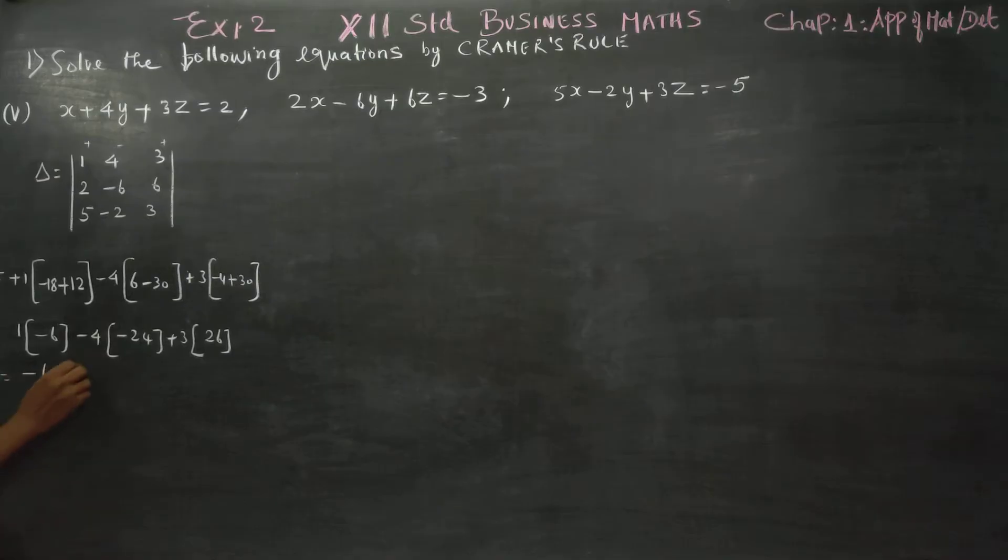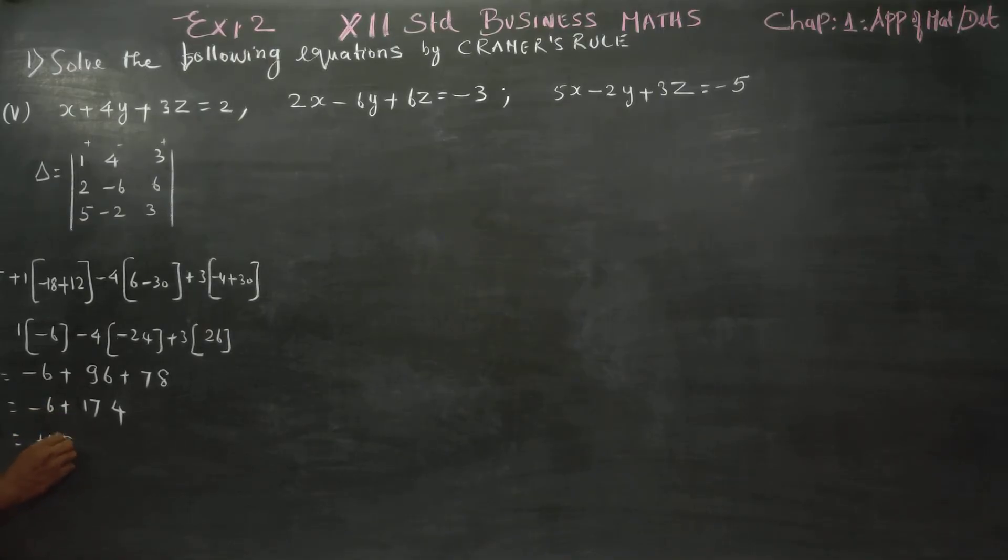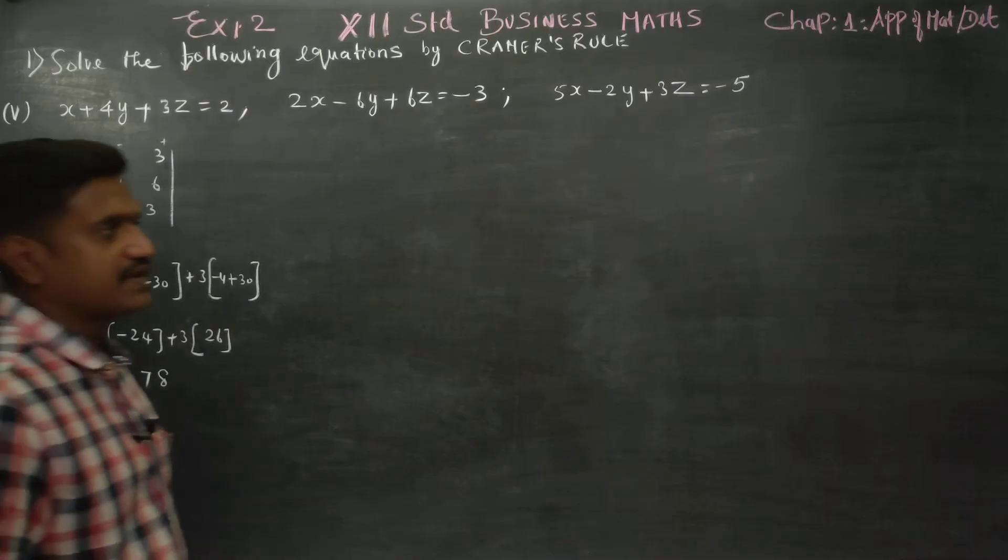This becomes minus 6, minus into minus plus. 4, 4s are 16, 4, 2s are 8, 96, 6, 3s are 18, 1 carry, 3, 2s are 6 plus 1, 7. Just add to this, minus 6 plus this is 4 item, 10, 17, 1, 74, 6 are minus 168 plus 168 is your answer. This is our delta. First you have finished our delta.